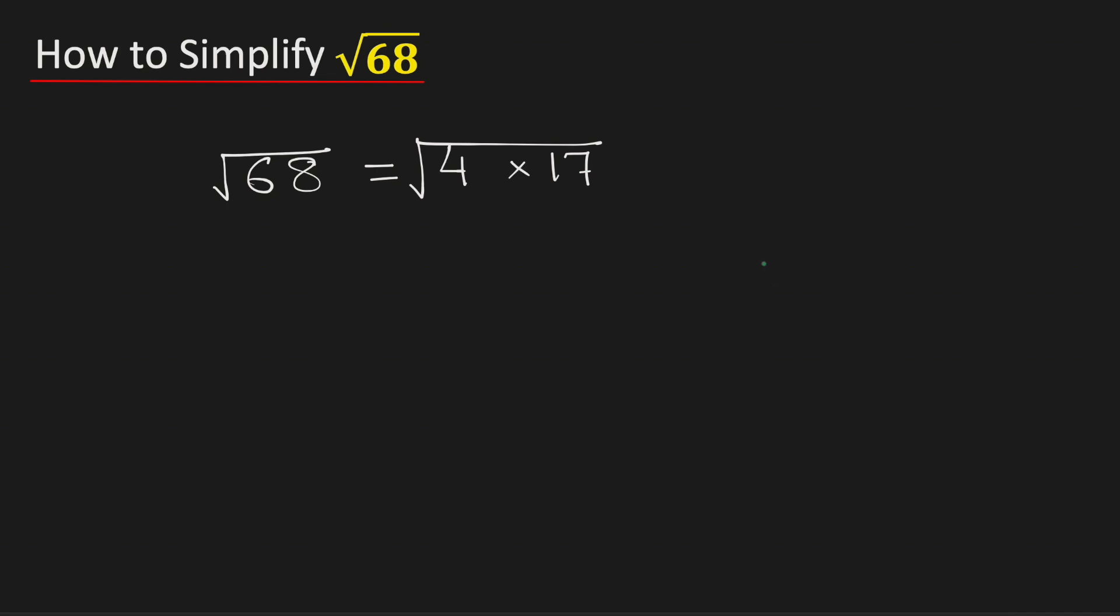Using the property that square root of a times b is equal to square root of a times square root of b, we can rewrite this as square root of 4 times square root of 17.